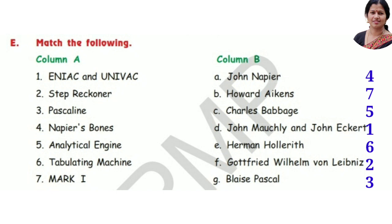Now match the following. Column A to Column B: ENIAC and UNIVAC — John Mauchly and John Eckert. Step Reckoner — Gottfried William von Leibniz. Pascaline — Blaise Pascal. Napier's Bones — John Napier. Analytical Engine — Charles Babbage. Tabulating Machine — Herman Hollerith. Mark One — Howard Aiken.